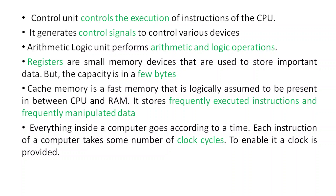Cache memory is assumed to be present between the CPU and RAM. Nowadays, some cache memory is also present inside the CPU chip itself. For convenience, we assume cache memory is in between CPU and RAM.